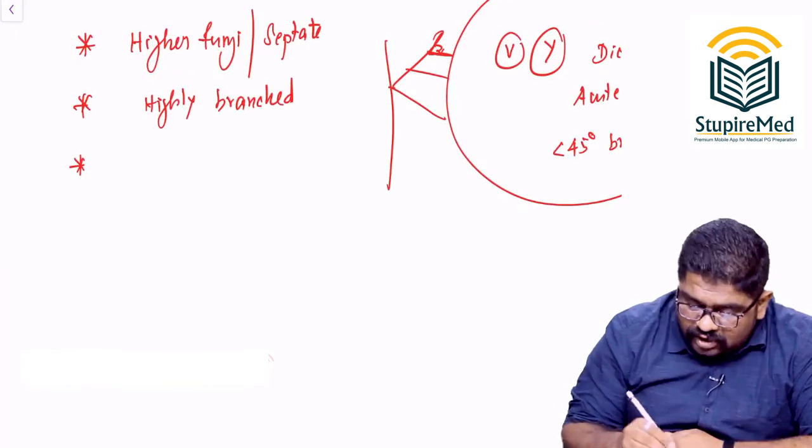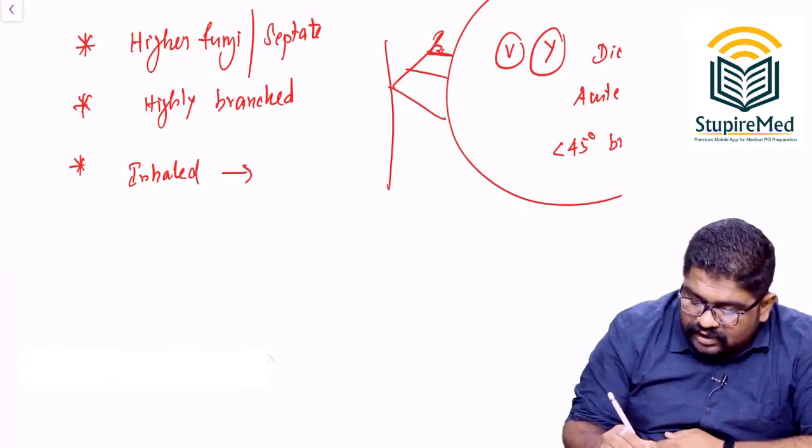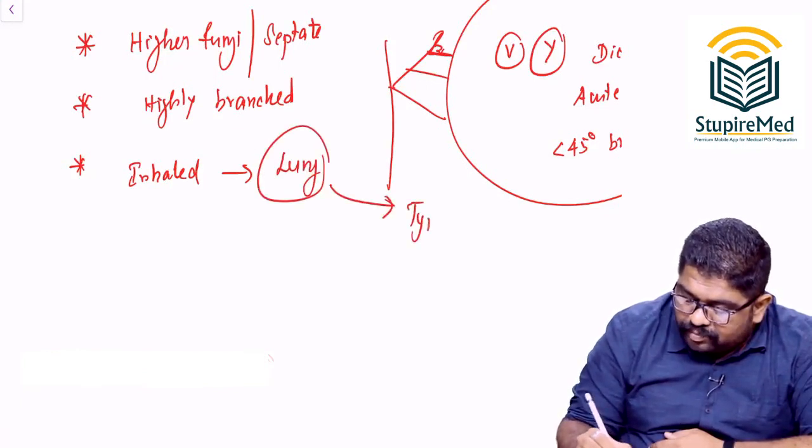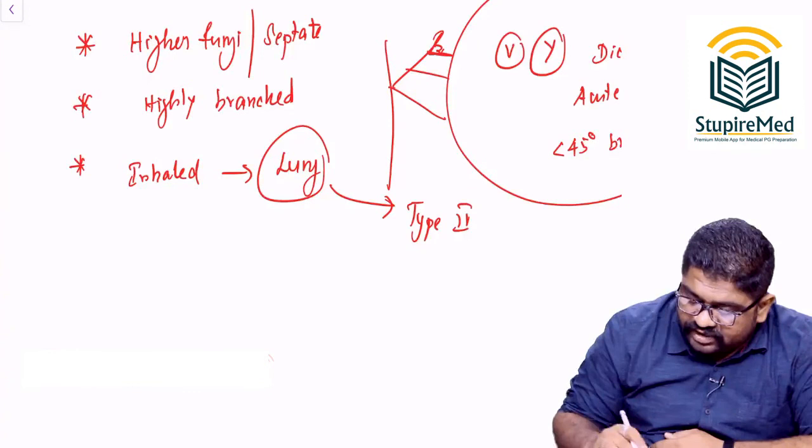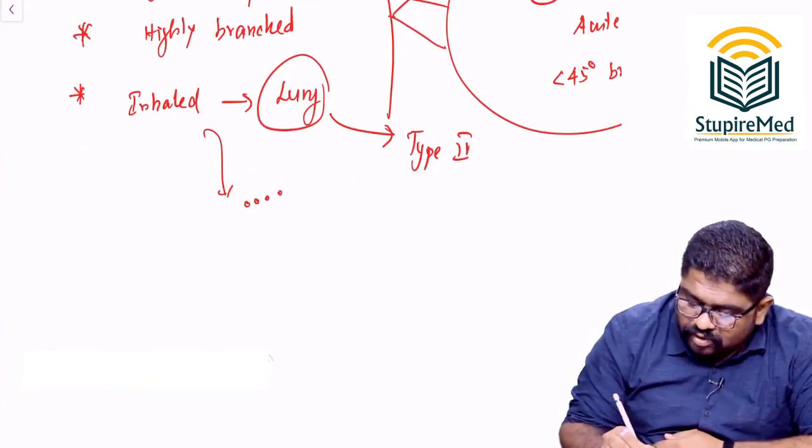Also, this organism can be unique because after getting inhaled, the organism can deposit in the lung and can deliver type IV hypersensitivity reaction. Also the organism can release microconidia.